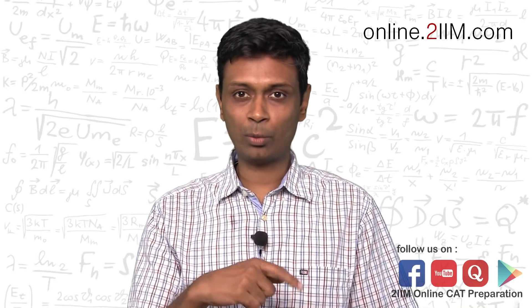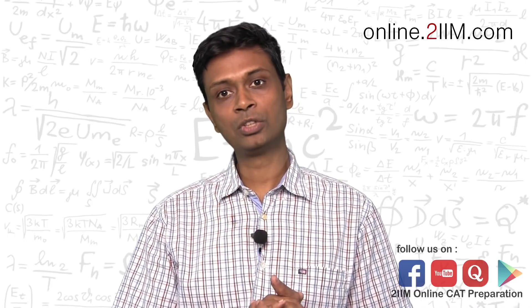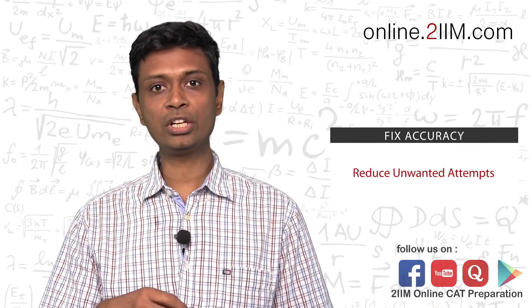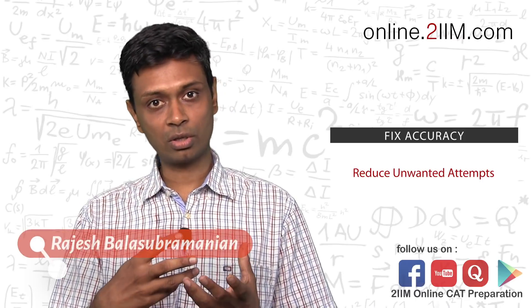If my mock scores are plateauing or they're volatile, what do I do? First thing: if they're volatile, that's a worrying signal. That means you're taking too many chances. That usually means accuracy is out of whack, so you're taking chances, trying to go too quickly, and you're getting lots of questions incorrect in the odd mock.